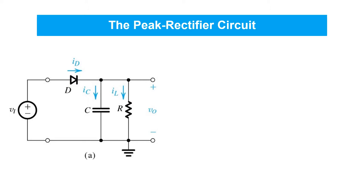This is useful in cases where, for example, you're trying to use the rectifier to generate a DC supply voltage. A more nuanced interpretation of how the circuit works can be obtained by thinking about it in its two operating conditions.